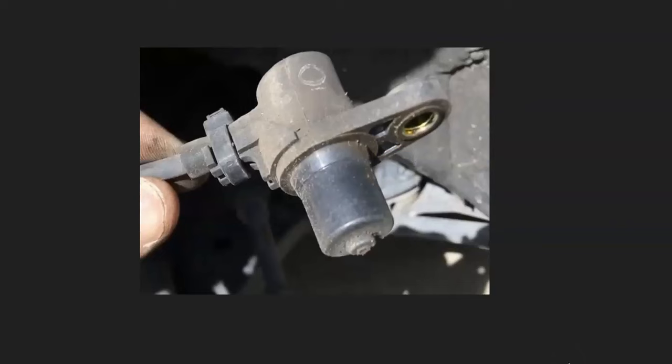One of the first things to do when you get this code is to test all the ABS wheel speed sensors. Depending on the Toyota, sometimes they use those sensors as the input information for the transmission. Sometimes there's a sensor built into the transmission, and sometimes they use these ABS wheel speed sensors. It's going to vary.